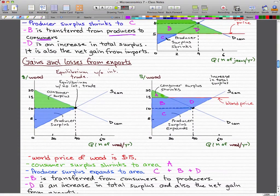Now let's take a look at the gains and losses from exports. So again, this is what we have with no international trade. The total surplus is equal to the consumer surplus plus the producer surplus.